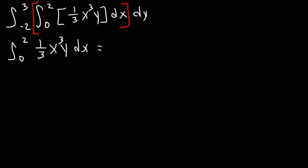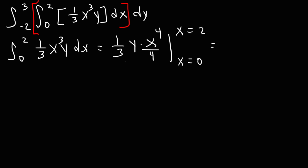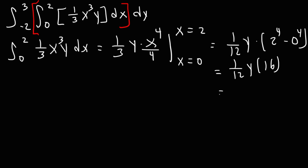We're integrating with respect to x. So it's going to be 1/3 y — those are the constants — times the antiderivative of x cubed, which is x to the fourth over 4, evaluated from x equals 0 to x equals 2. We can combine 3 and 4 in the denominator to get 1/12 times y. Plugging in the x values gives 2 to the fourth minus 0 to the fourth. 2 to the fourth is 16, and we can reduce 16 over 12: 16 is 4 times 4, 12 is 4 times 3, so canceling the 4 gives us 4/3 y.